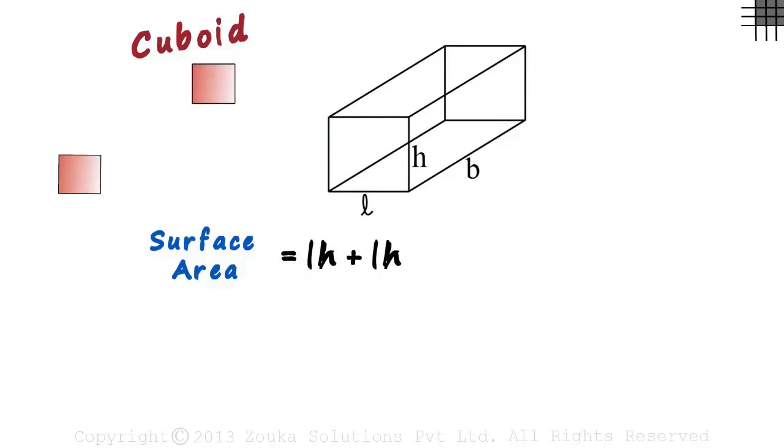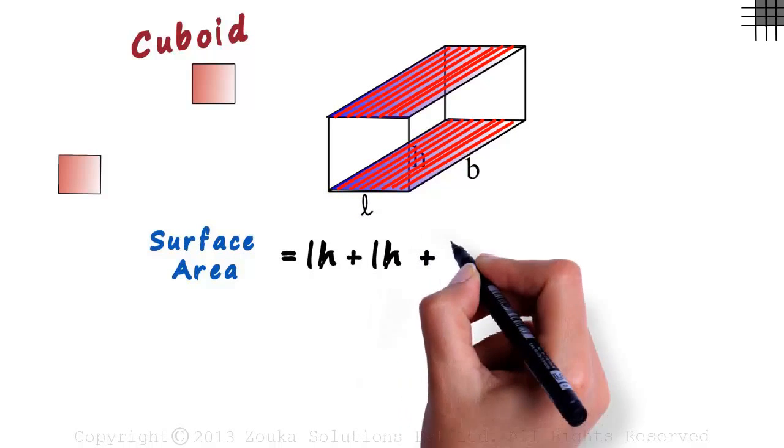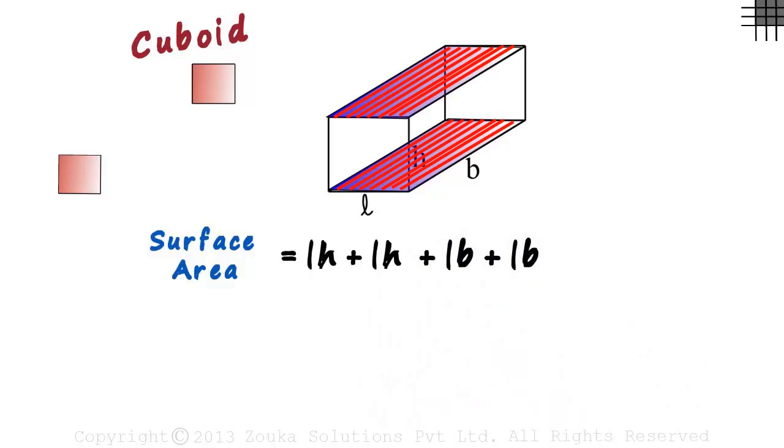The area of the rectangle at the bottom is L multiplied by B, length multiplied by breadth. The area of the rectangle on top will also be the same as that of the bottom. Their sum will be LB plus LB. Now let us take these two to the side.